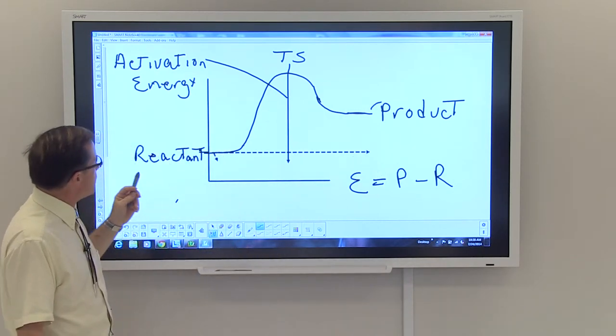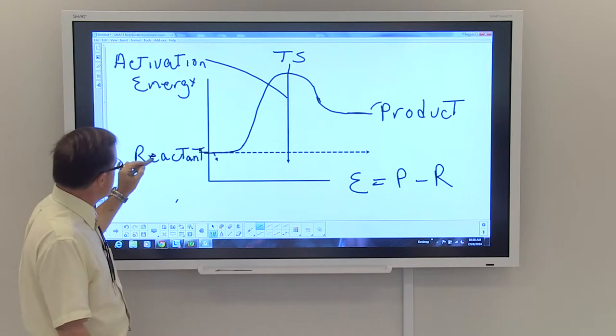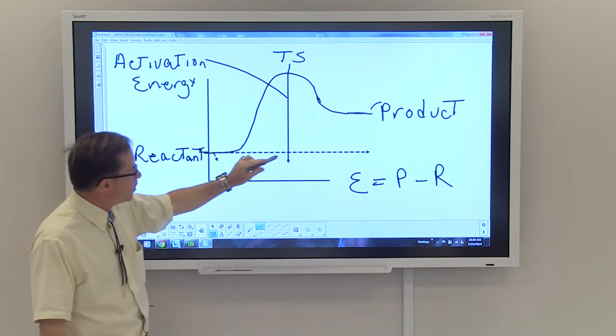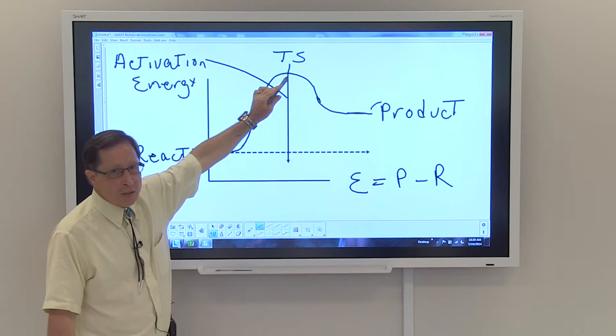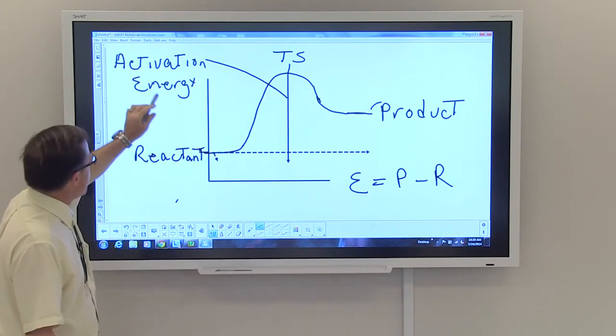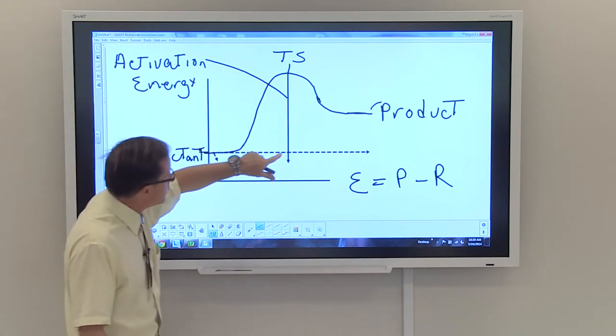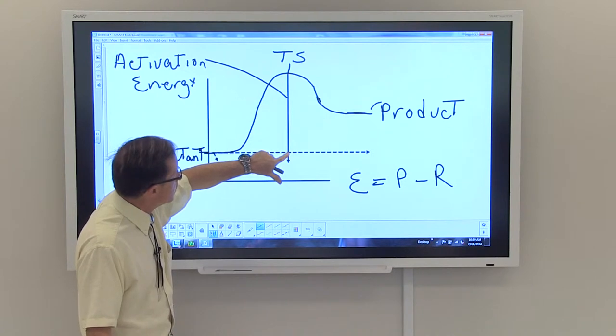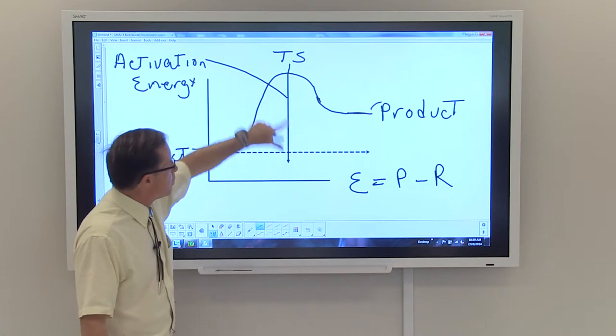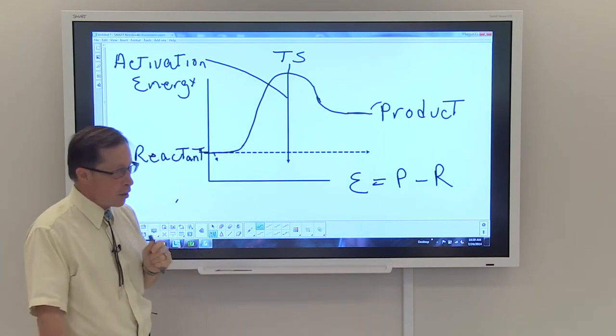Now, the amount of energy that it takes to raise the reactant from its reactant state up into a transition state is called the activation energy. And it is actually this area from here to here. The difference in those two areas is your activation energy.